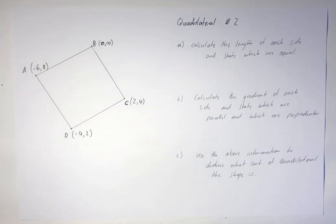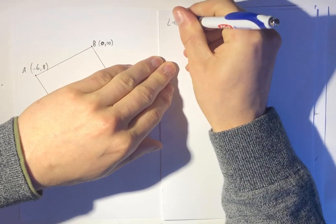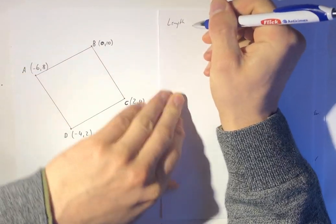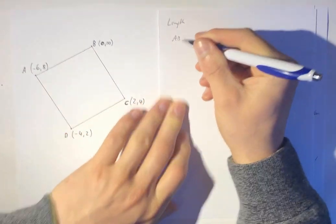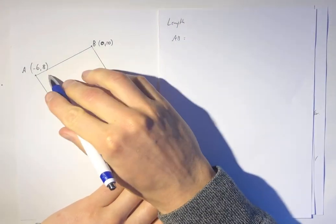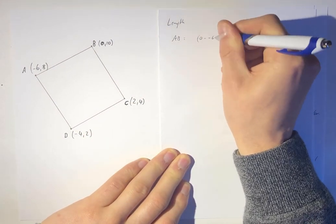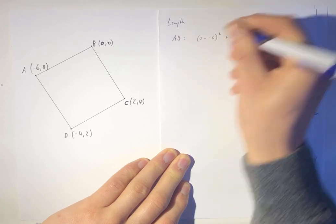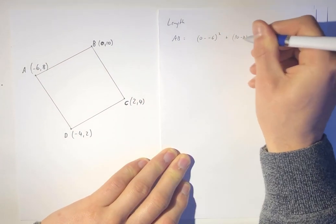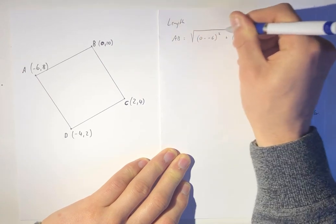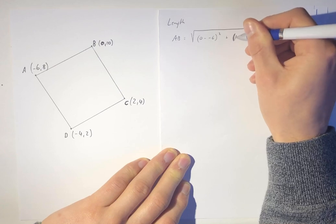So first step is going to calculate the length of each side. Okay, so length, I'm going to go AB first. Well that's going to be the difference in x squared, so zero take away negative six squared, plus the difference in the y's squared, ten minus eight squared, and that's all going to be square rooted.